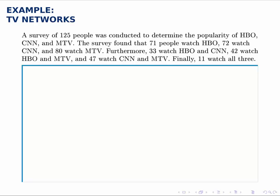Here's another survey problem, but this one is starting to get to the point where these Venn diagrams are going to be really helpful, because if you notice, there are going to be three circles, because there are really three questions in the survey. Who watches HBO, who watches CNN, and who watches MTV?